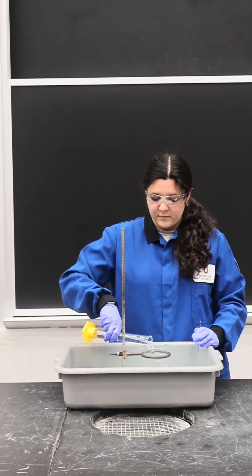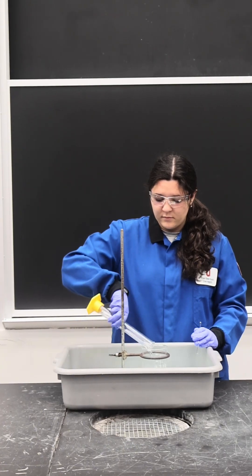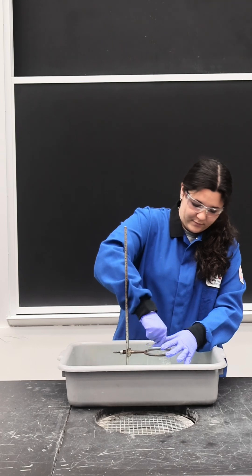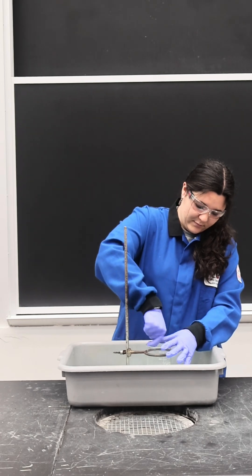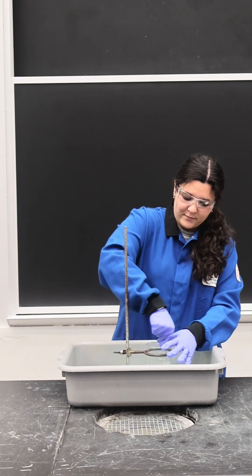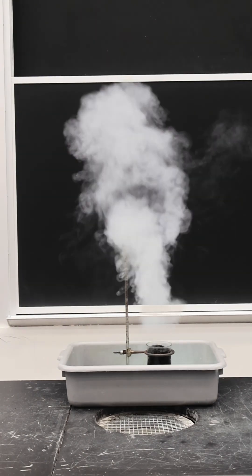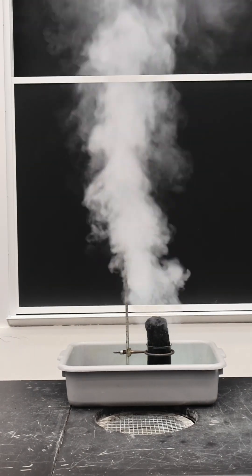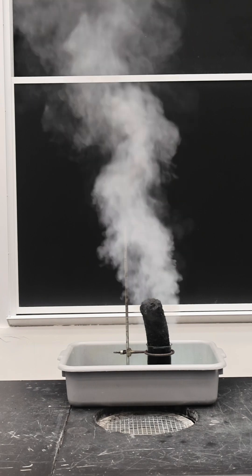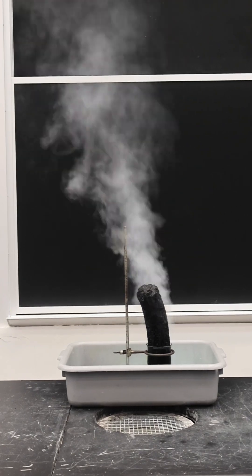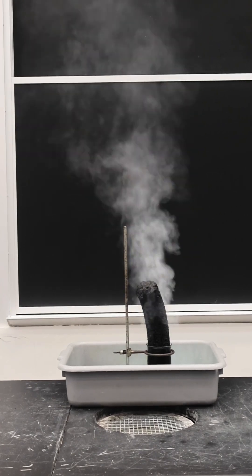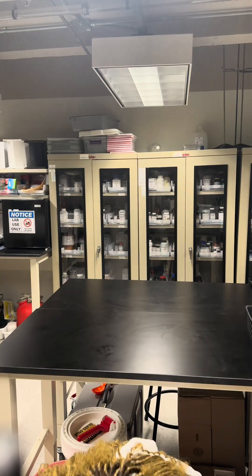Now let's move on to the black carbon snake. In this demo we are mixing sugar with sulfuric acid. When the two mix, the sugar again decomposes, but it does not release carbon dioxide. Instead, a solid piece of carbon forms and water vapor is released.